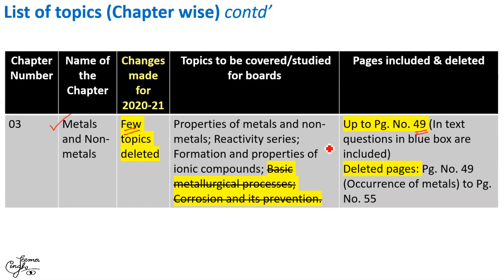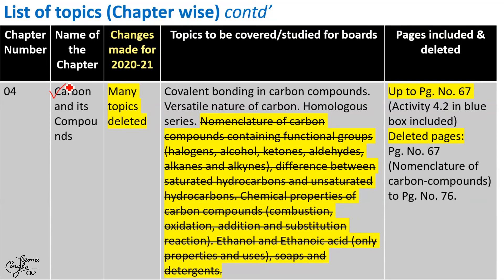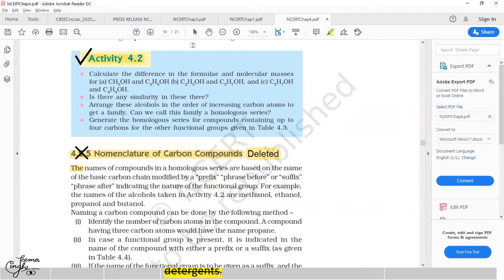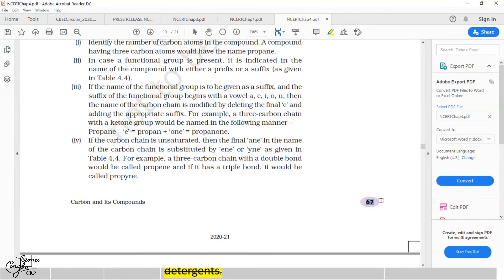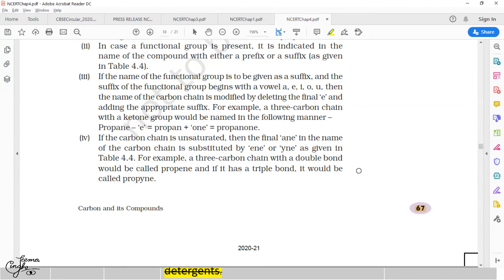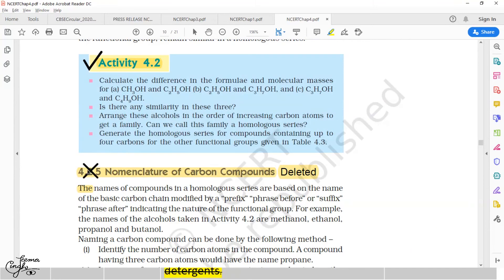Moving on to Chapter 4, Carbon and its Compounds — this chapter has been drastically cut down. These are the topics that have been deleted from this chapter. Going by pages, you have this chapter up to page number 67. You need to study Carbon and its Compounds up to Activity 4.2, which is on page number 67. The portion that stands deleted begins from section 4.2.5, Nomenclature of Carbon Compounds.